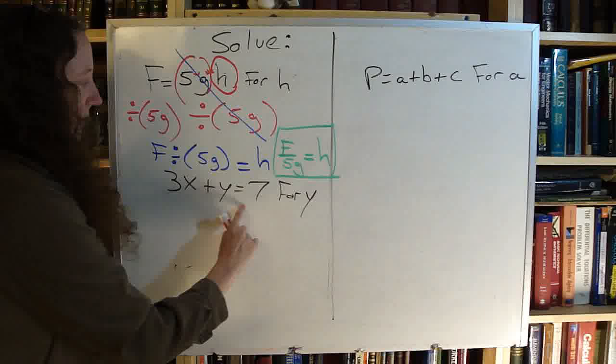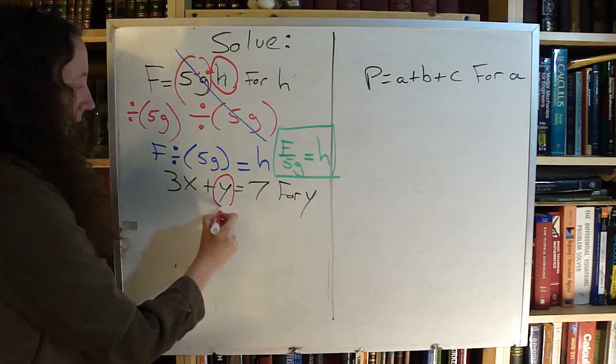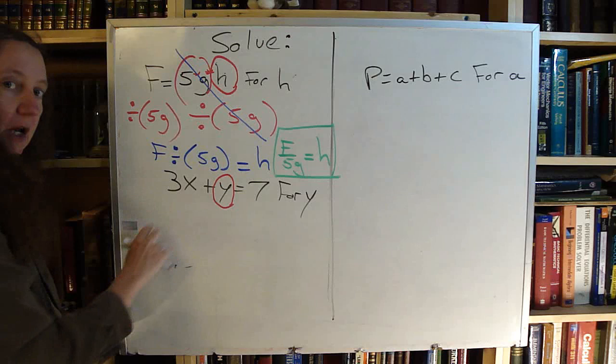The second example down here. 3x plus y equals 7. Solve for y. So I need to find out where is my y. There it is. I need to get rid of the 3 and the x.